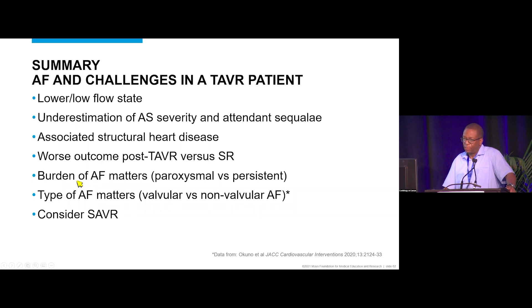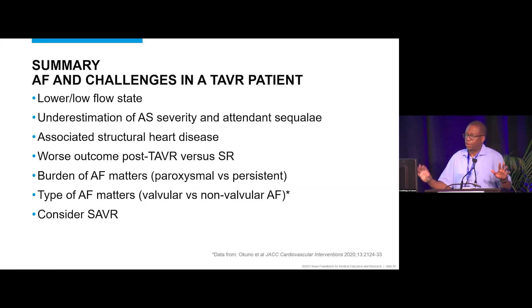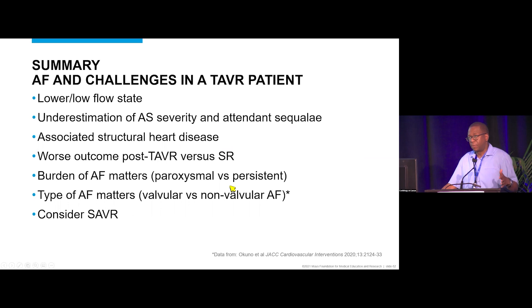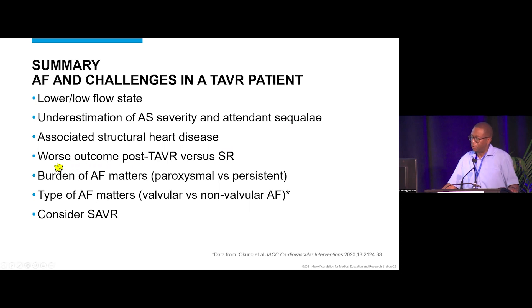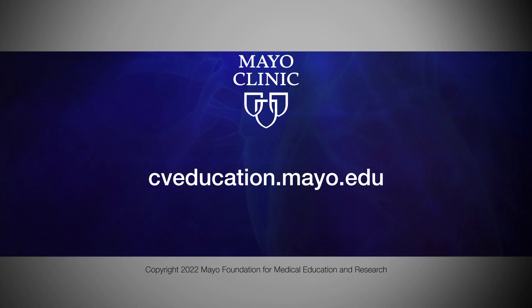The type of atrial fibrillation also matters — we now distinguish valvular atrial fibrillation from non-valvular AFib. Patients with concomitant mitral stenosis or prior mitral valve surgery have worse outcomes than those with non-valvular AFib. And the guidelines suggest considering surgical aortic valve replacement rather than TAVR in patients with atrial fibrillation, where concurrent structural issues can be addressed simultaneously.